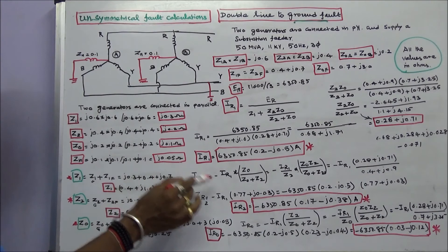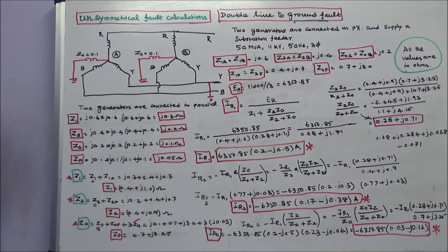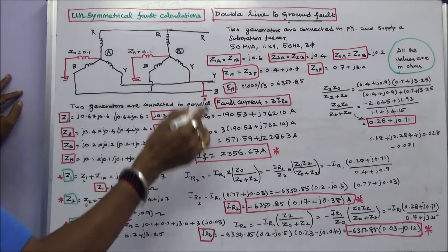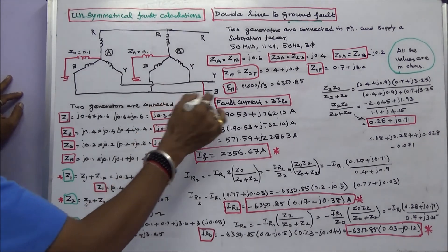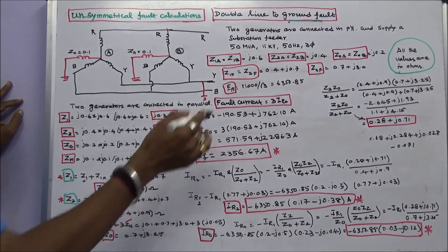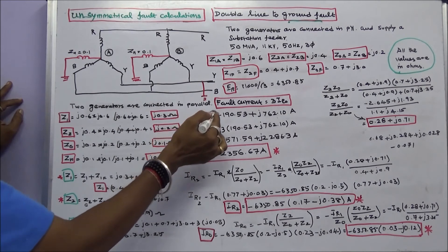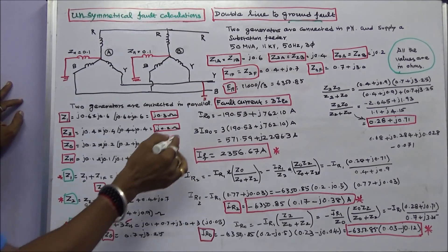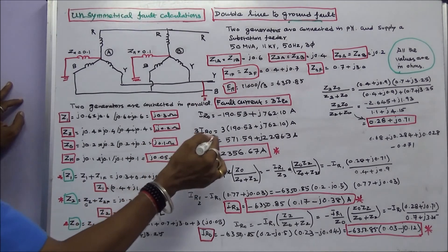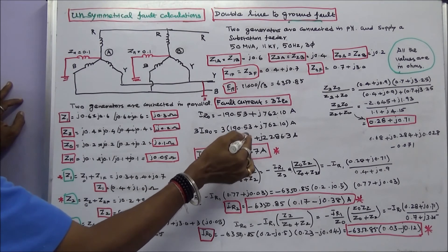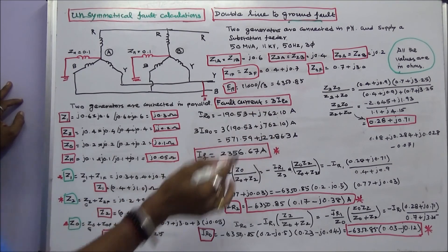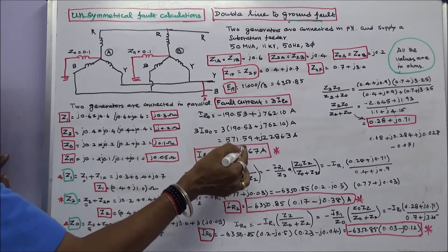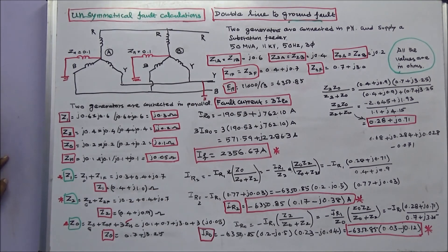Note that IR1 plus IR2 plus IR0 equals zero. The question asks: if a fault involves the Y and B phases, calculate the fault current. The fault current equals 3 times IR0. IR0 equals minus 190.53 plus J762.10 amps. Therefore, 3 times IR0 equals 571.59 plus J2286.3 amps. The magnitude of the fault current IF equals 2356.67 amps.